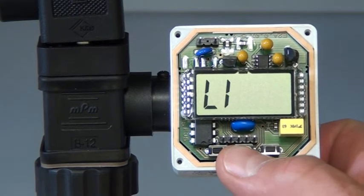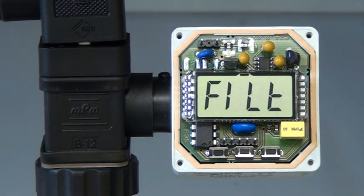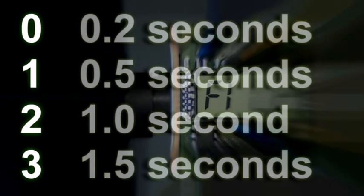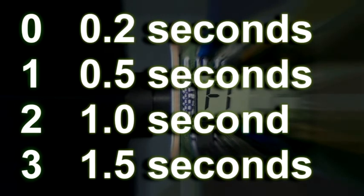Continue through the programming steps, press B to bring up the filtering menu. The digital filtering feature is selectable in four settings: 0, 1, 2, and 3. 0 represents 0.2 seconds, 1 represents 0.5 seconds, 2 represents 1 second, and 3 represents 1.5 seconds.